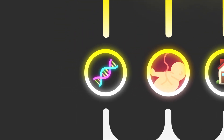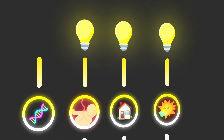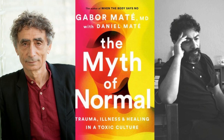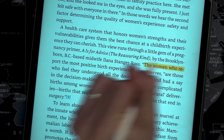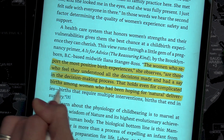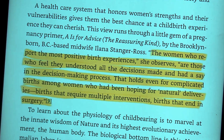Now, what can we do about it? For genetics, there's nothing we can do unless you create CRISPR 5.0, but for the rest, there's a lot we can do. In the womb, because stress hormones have many negative effects on a fetus, our goal should be to implement policies that reduce them as much as possible. The women who report the most positive birth experiences are those who felt they understood all the decisions made and had a say in the decision-making process — even for complicated births among women hoping for natural deliveries, births requiring multiple interventions, or births ending in surgery. So being in on the decision-making process can reduce stress.